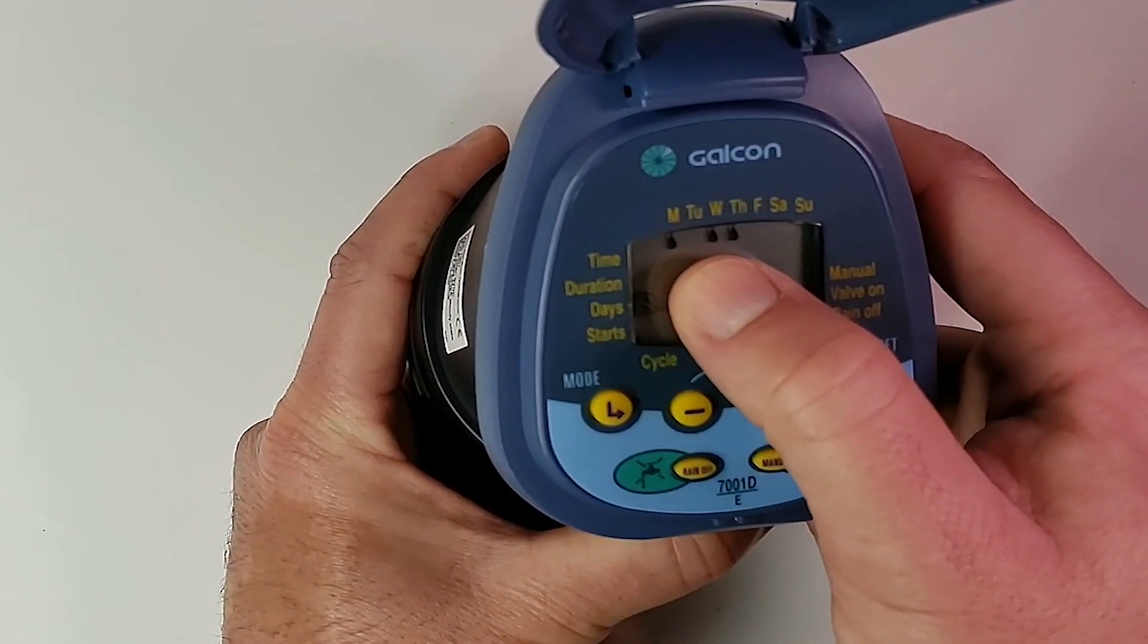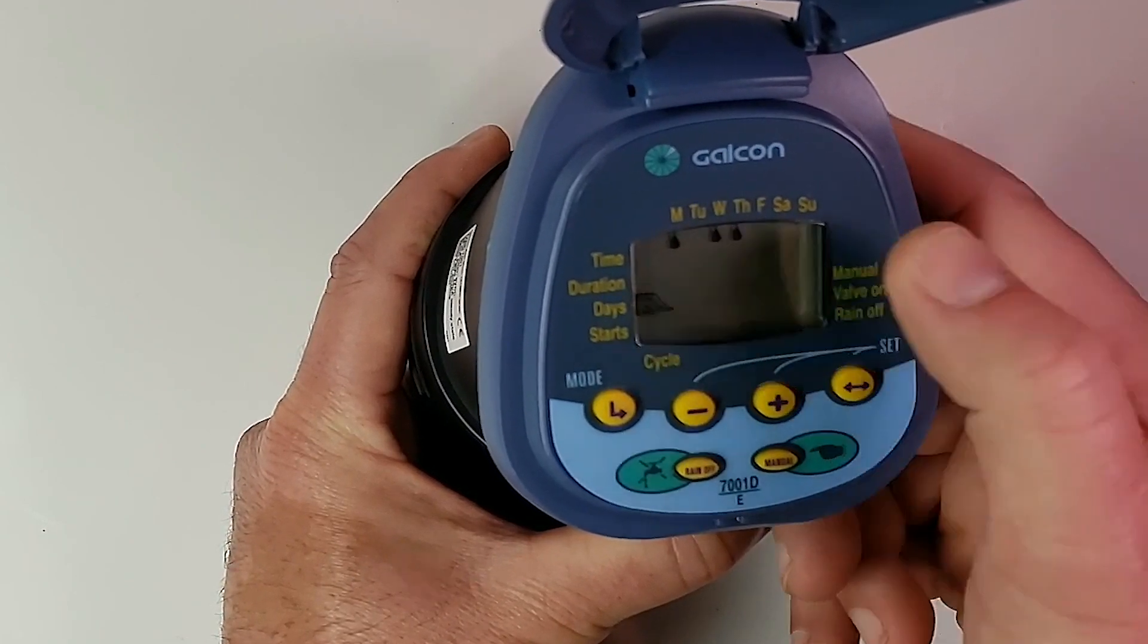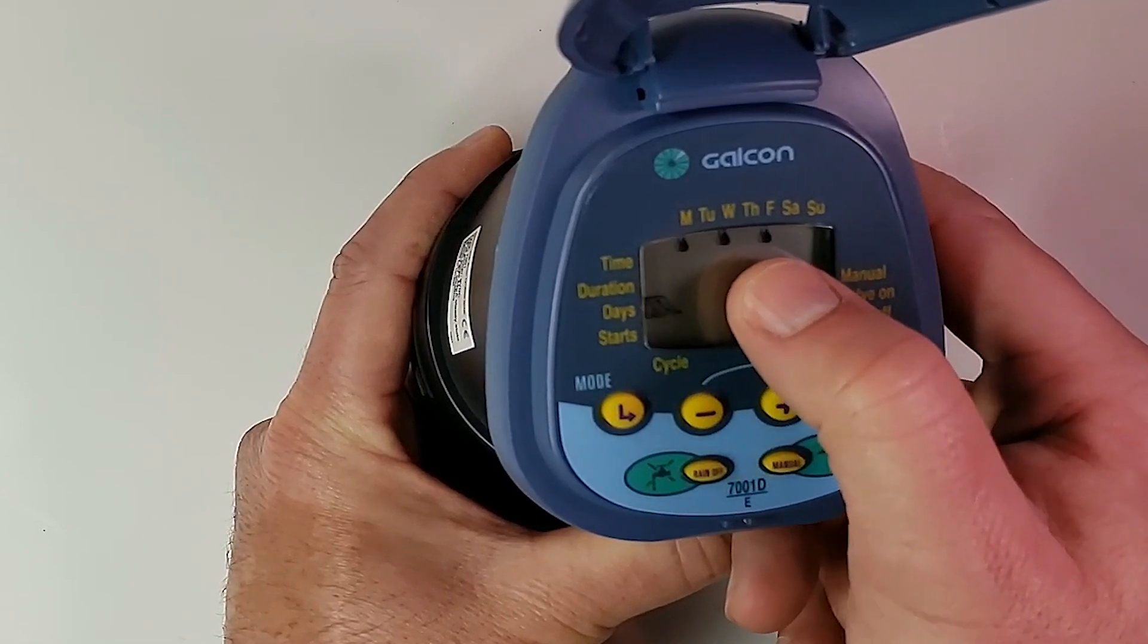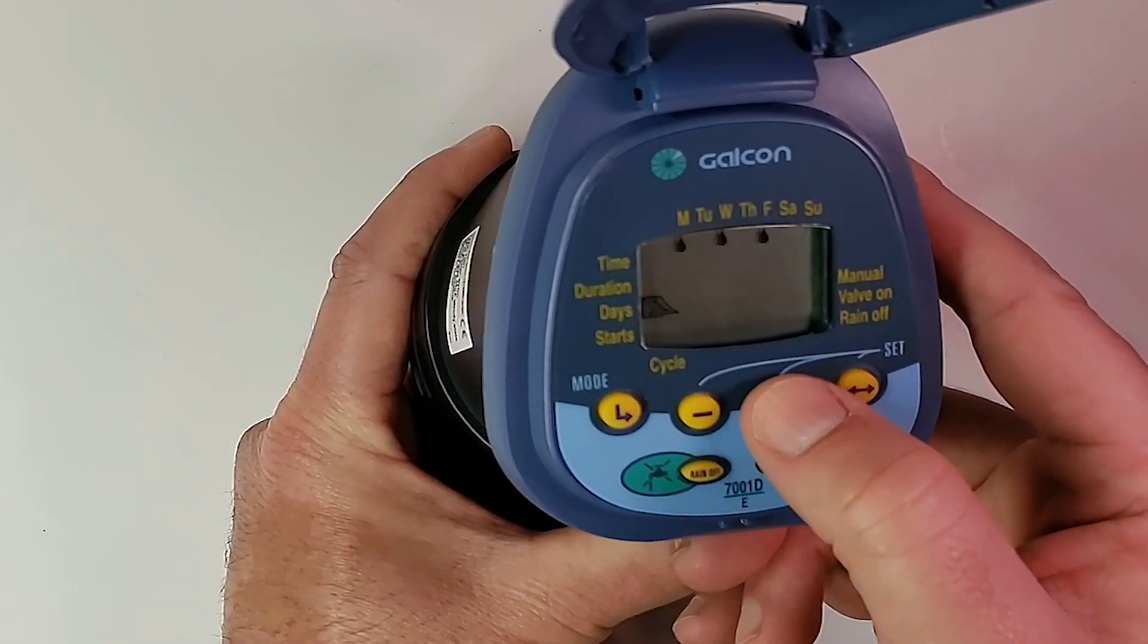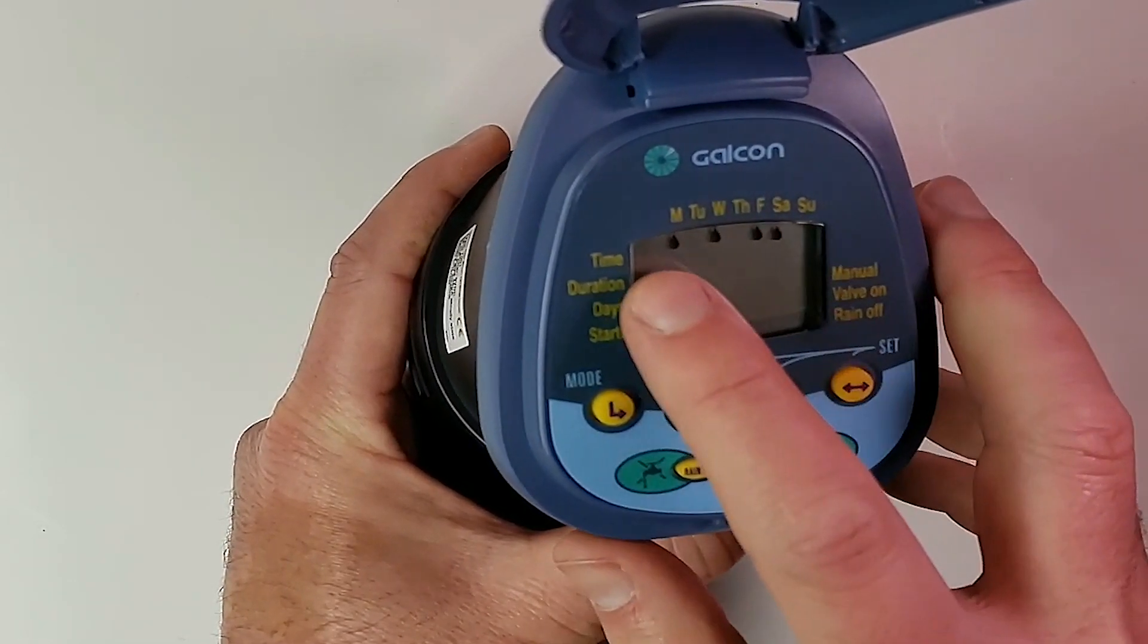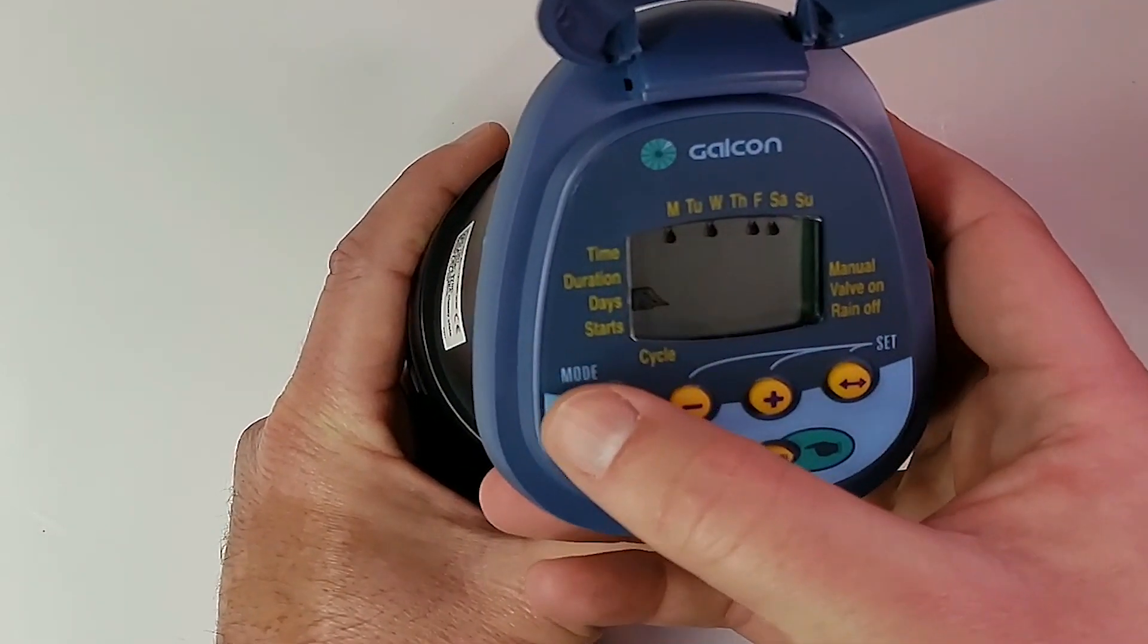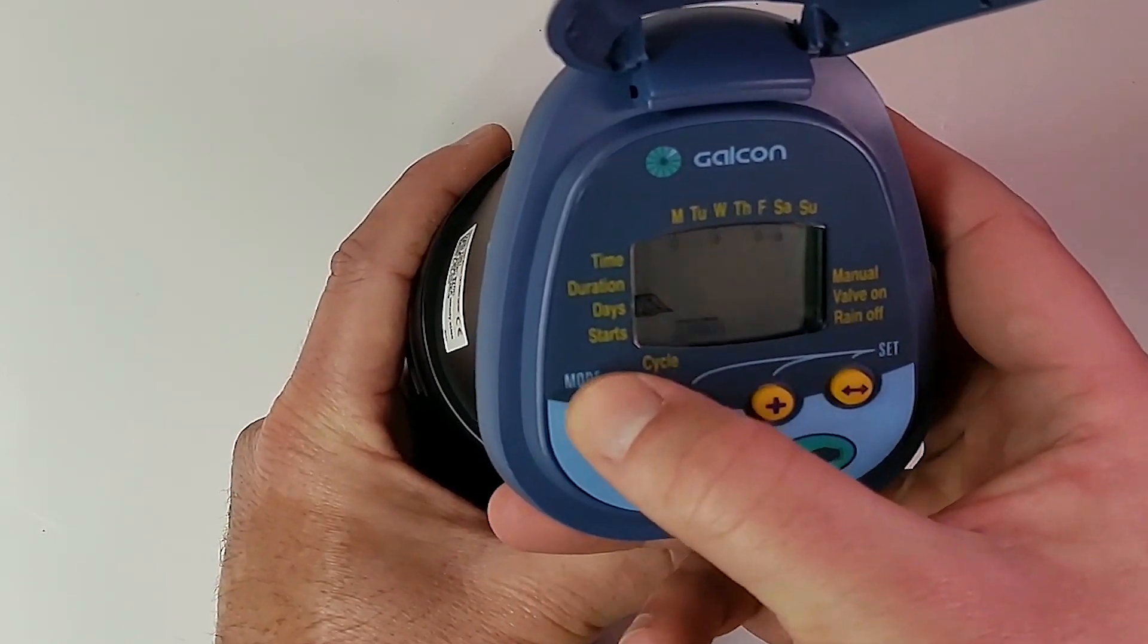We have Monday and Wednesday set and Thursday flashing. Our set button again moves the raindrop over to Friday. Plus button one more makes Monday, Wednesday, Friday set with a Saturday option. Then we're going to hit our enter button.